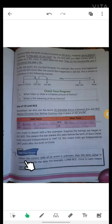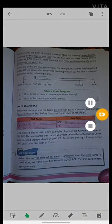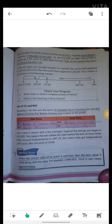Did you know, when the correct date of an event is unknown, then the term Circa is used along with the date? For example, C for Circa 2400 BCE. Circa is Latin and means approximately.